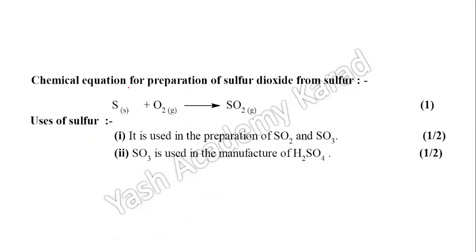Write chemical equation for preparation of sulfur dioxide from sulfur. Simple reaction: sulfur oxidation in presence of oxygen gives sulfur dioxide. One mark. Uses of sulfur: from sulfur we prepare sulfur dioxide and sulfur trioxide, and sulfur trioxide is used in the manufacture of sulfuric acid.